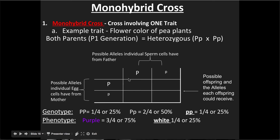We can show how this can be constructed so we can get these odds calculated and worked out — making predictions about what a future cross may look like. Our example, using purple flowers again, is to do what we'd call a monohybrid cross. Mono meaning one — we're going to look at just one trait and follow it through. This is a cross involving one trait.